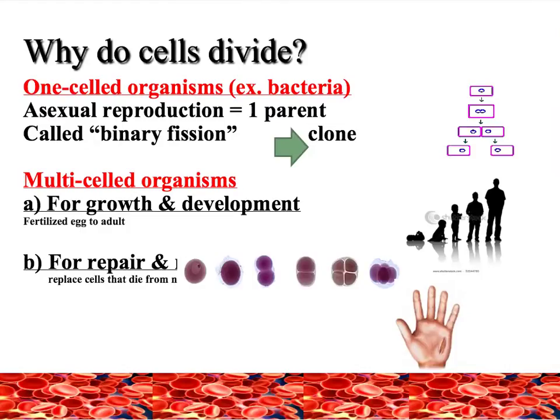Besides growth and development in multi-celled organisms, cells also divide for repair and replacement of old and dying cells. In one-cell organisms such as bacteria or amoebas, this is the way that they reproduce asexually, meaning they only need a parent to reproduce. This is also called binary fission and it produces clones identical to the parent cell.